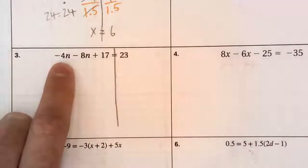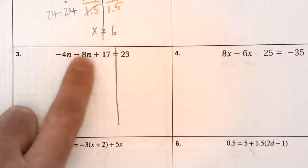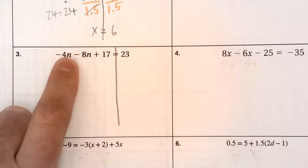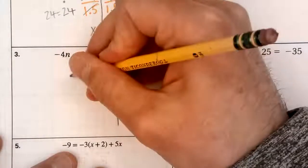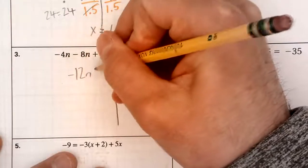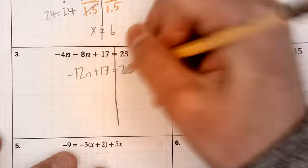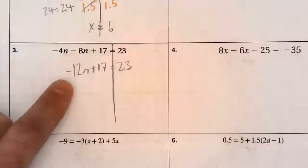I'm going to combine like terms. So negative 4n minus 8n. I want to do that first. Turns out that's negative 12n. Negative 4 minus 8 is negative 12n. Okay. That's great. That's combining like terms.